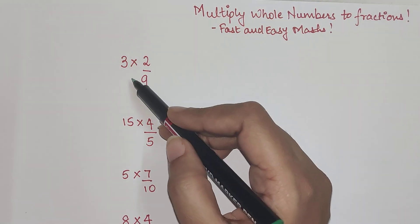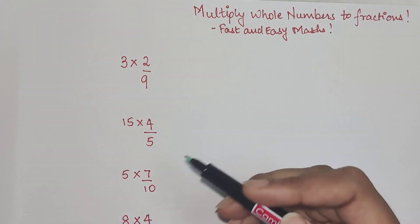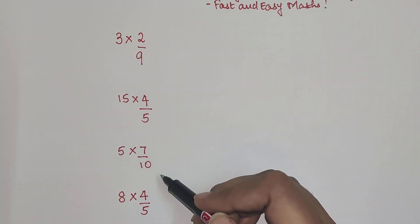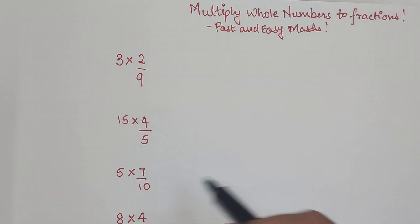So students, today I am going to teach you how to multiply whole numbers to fractions. Basically something like this where we have 3 into 2 upon 9, 15 into 4 upon 5, then 5 into 7 upon 10, then 8 into 4 upon 5.